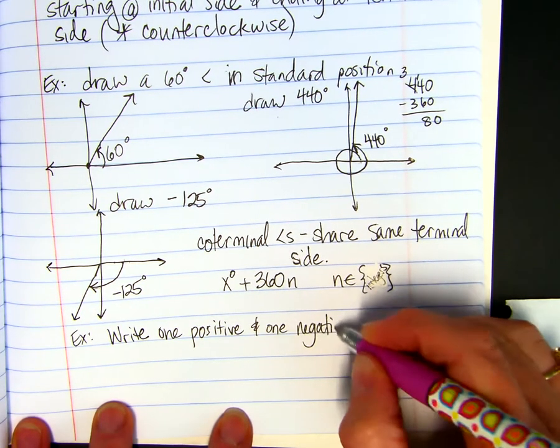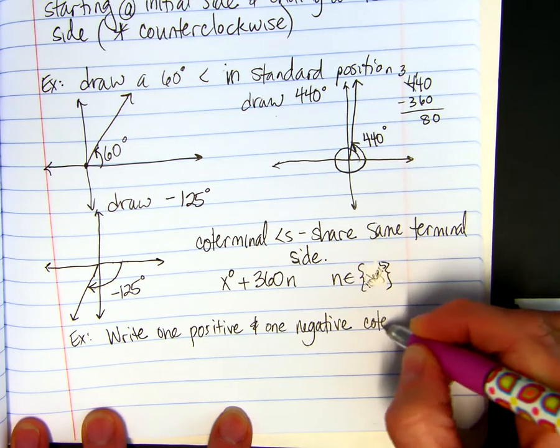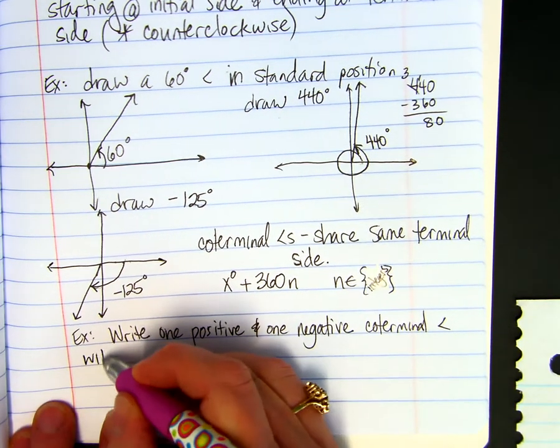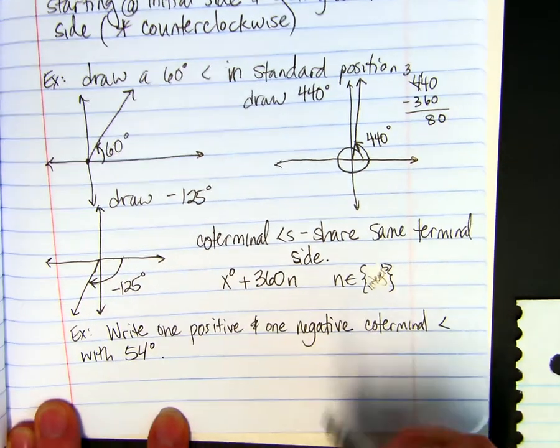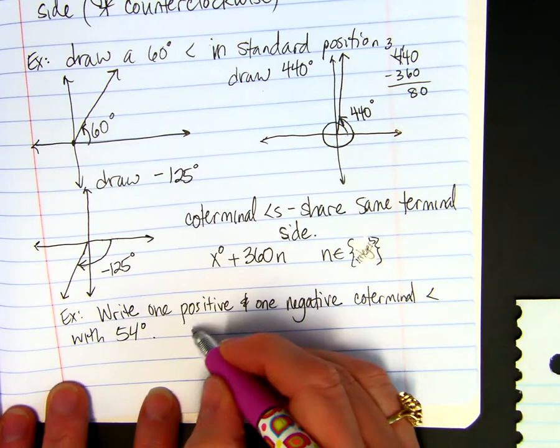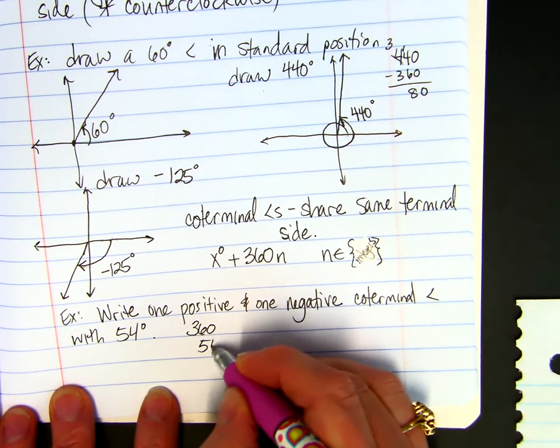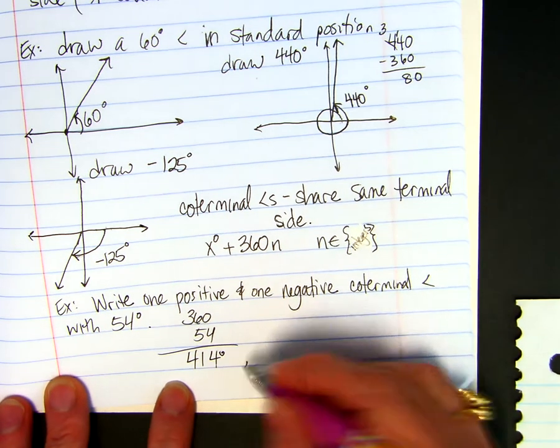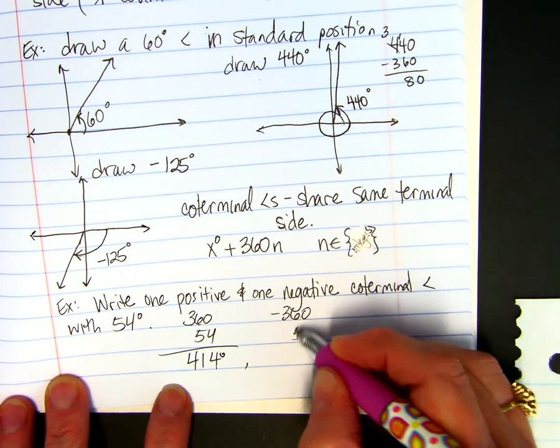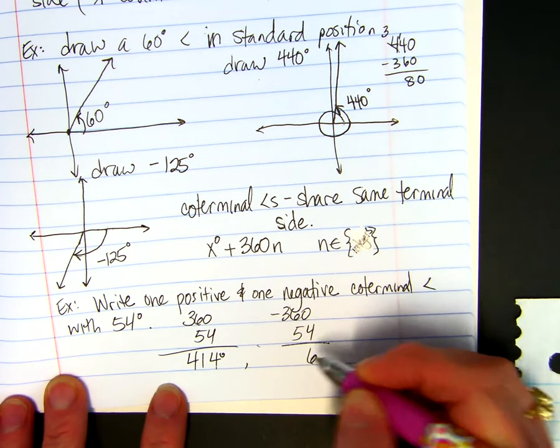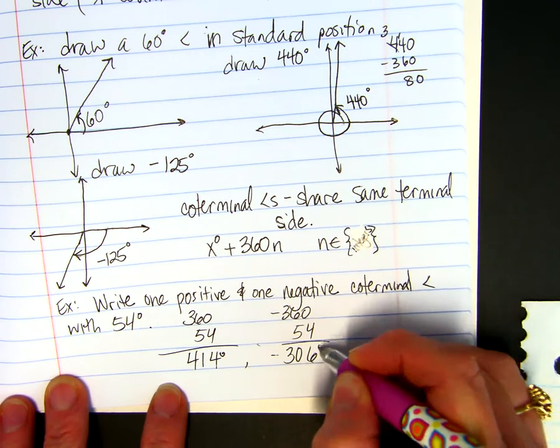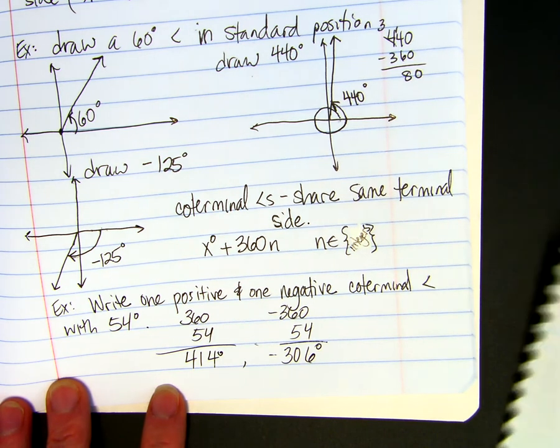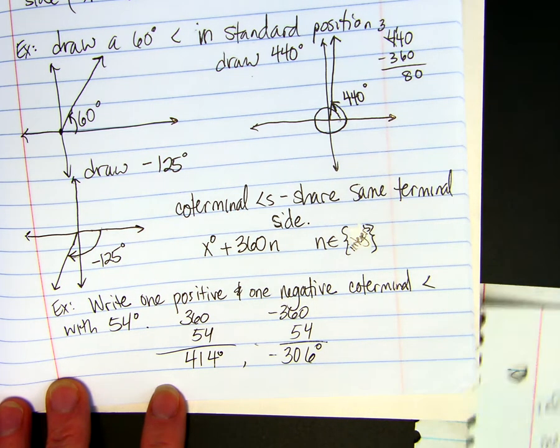We're going to do an example of these co-terminals with 54 degrees. One positive, we could just do 360 plus 54. So 414 degrees is co-terminal. And then we could do maybe negative 360 plus 54 degrees. Negative 306 degrees. Will the initial side always be the positive x axis? Yes. By definition, it is.